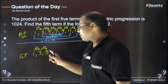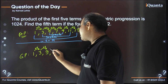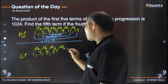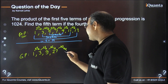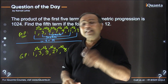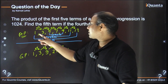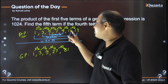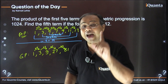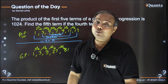Now the important concept in GP — listen very carefully. In an AP, the sum of symmetric pairs was equal. But in a GP, it is not the sum but the product that is going to be the same. So 1 × 81 — how much is that? It is 81. And 3 × 27 is also 81.